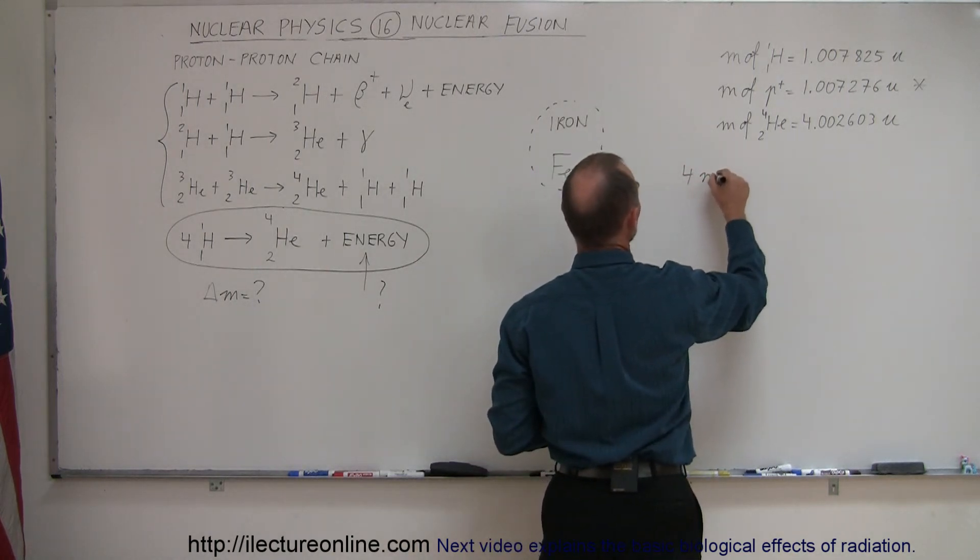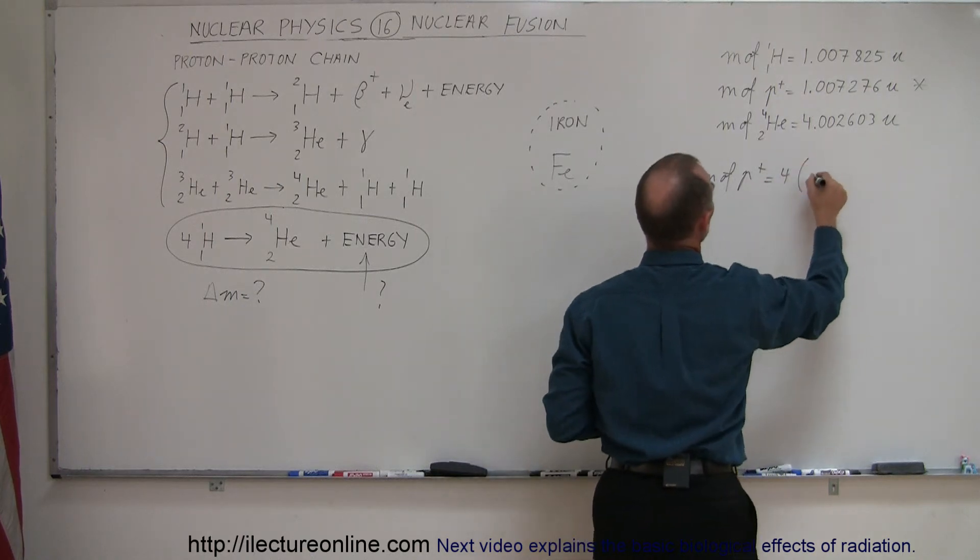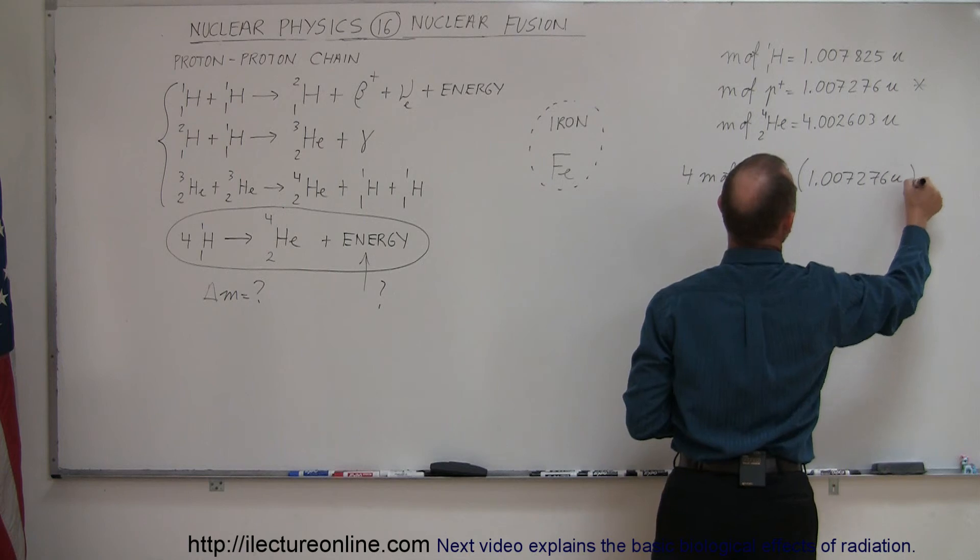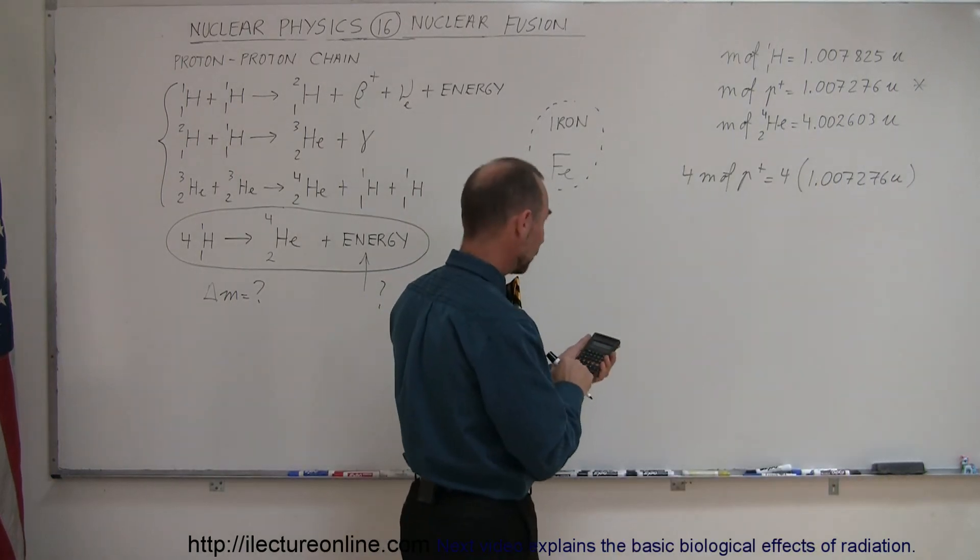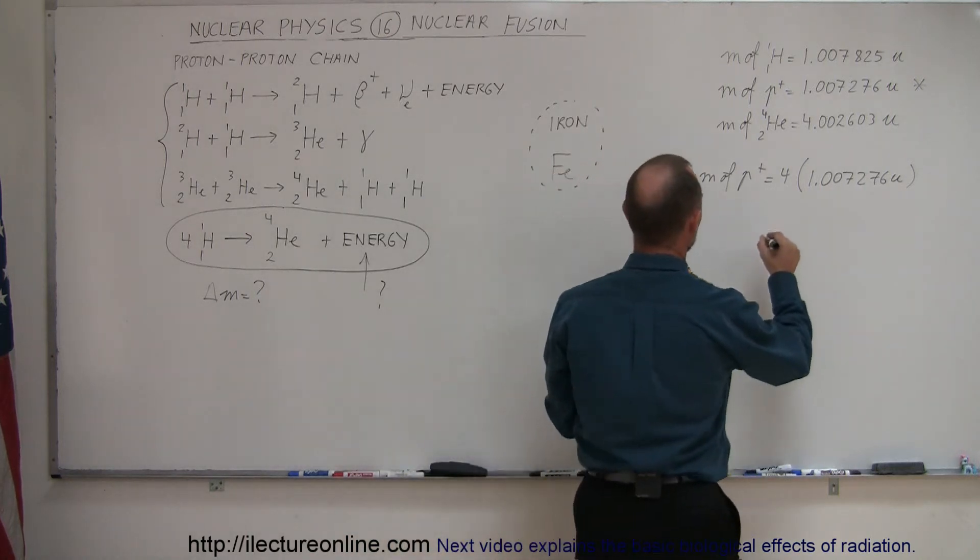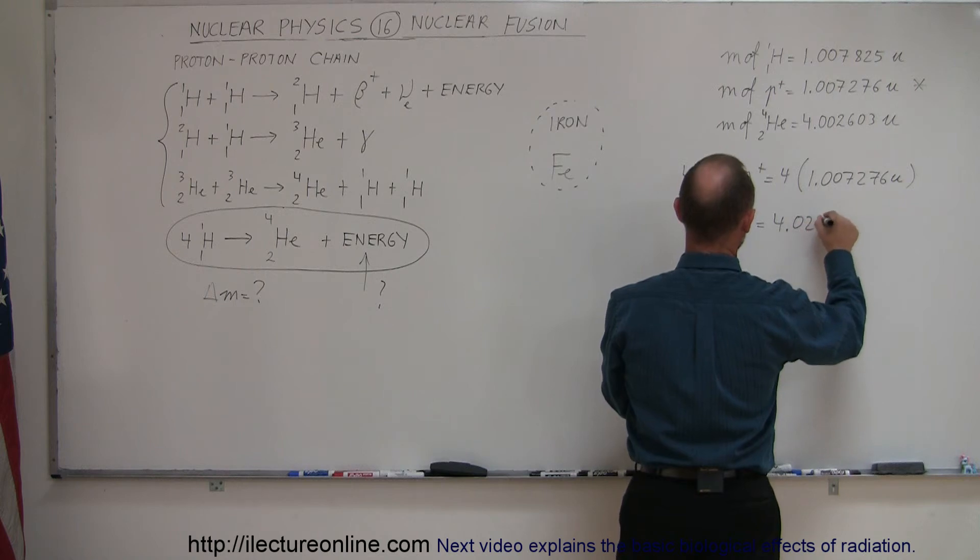Four times the mass of a proton is equal to four times 1.007276 atomic mass units. So 1.007276 times four equals 4.029104 atomic mass units.